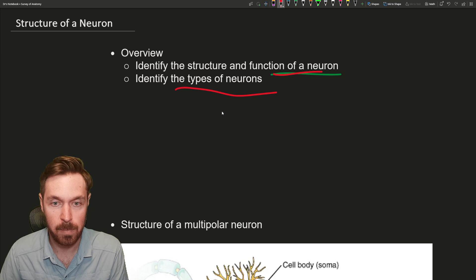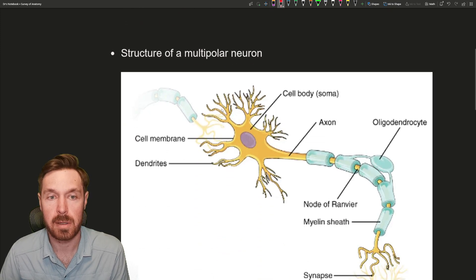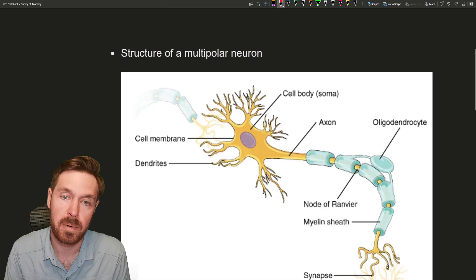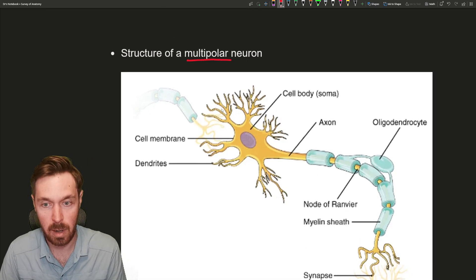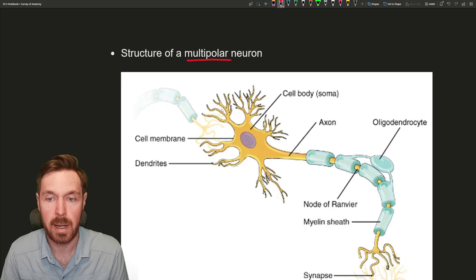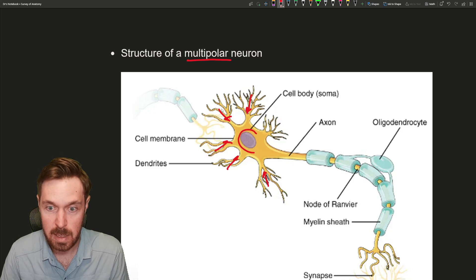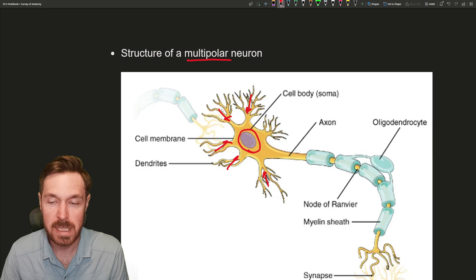Getting right into it, the structure of specifically one type of neuron called a multipolar neuron. A multipolar neuron has all its receptive endings at one end and they all get summated in this area right here called the cell body.